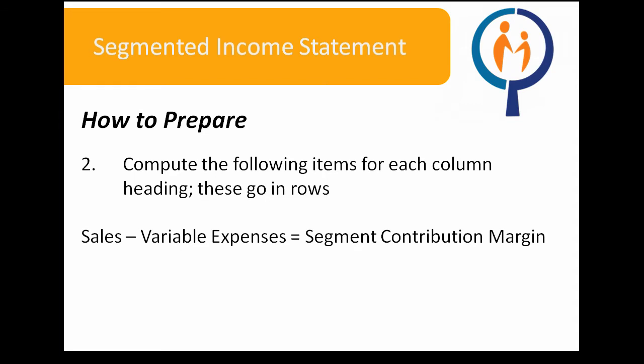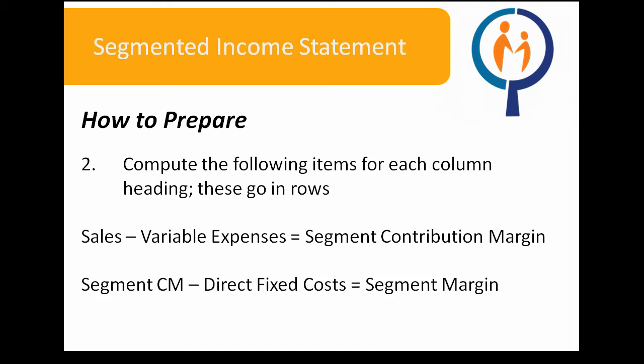Next, compute the following items for each column or division as row headings. Begin with sales, then take away variable expenses to find the segment contribution margin. Then take away direct fixed costs from the segment contribution margin to find the segment margin.